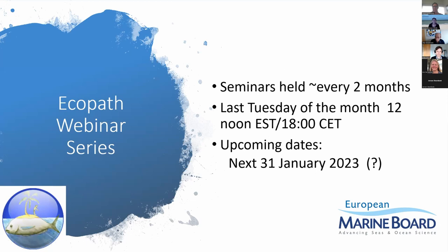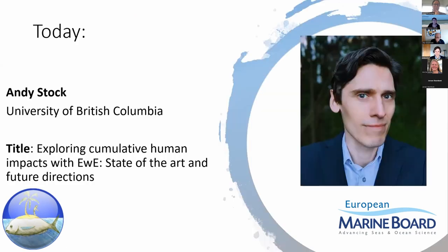The Ecopath webinar series used to be held every two months, and usually it's on the last Tuesday of the month at about 12 noon Eastern time, 6 o'clock European time, and 9 o'clock Vancouver time. If anybody wants to give a webinar in January, we do not have anybody to speak just now, so the next one would be on the 31st of January.